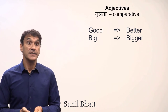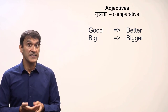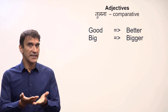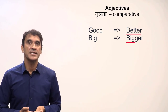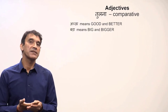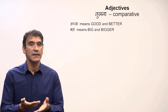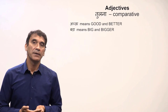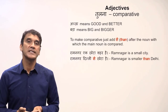Another feature of adjectives is their comparative form. The comparative form of an adjective is used to compare two objects. In English, 'good' is the basic adjective and 'better' is the comparative form; 'big' is the basic adjective and 'bigger' is the comparative form. The Hindi language does not have a specific form for the comparative — the basic form itself is the comparative. So 'achha' means both 'good' and 'better', and 'bada' means both 'big' and 'bigger'.